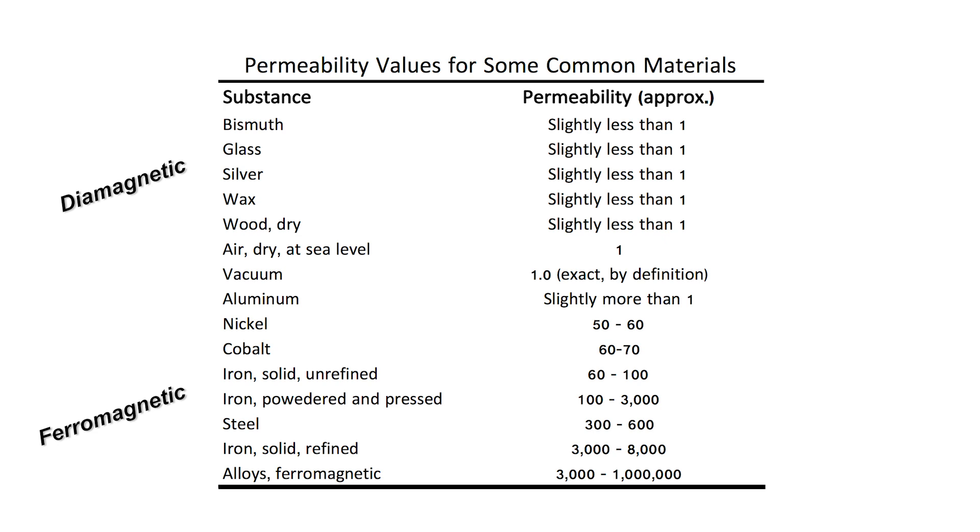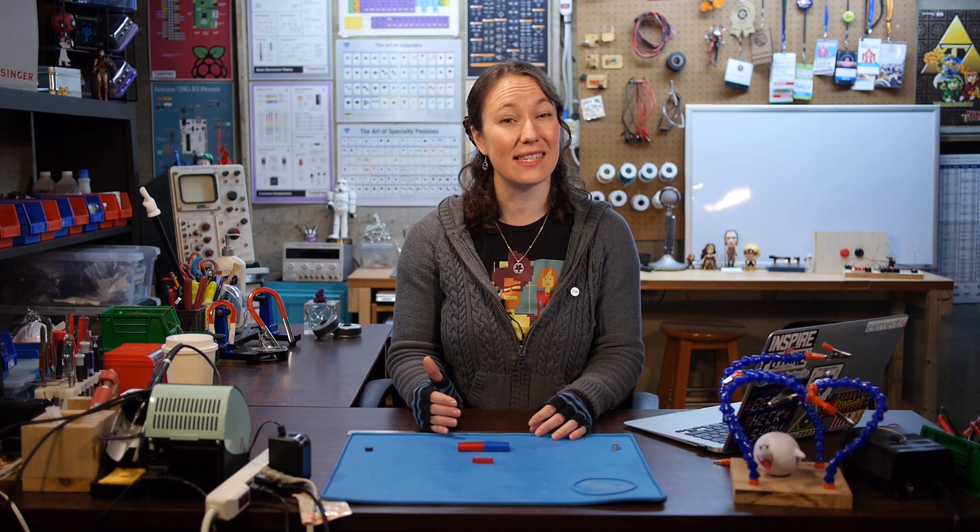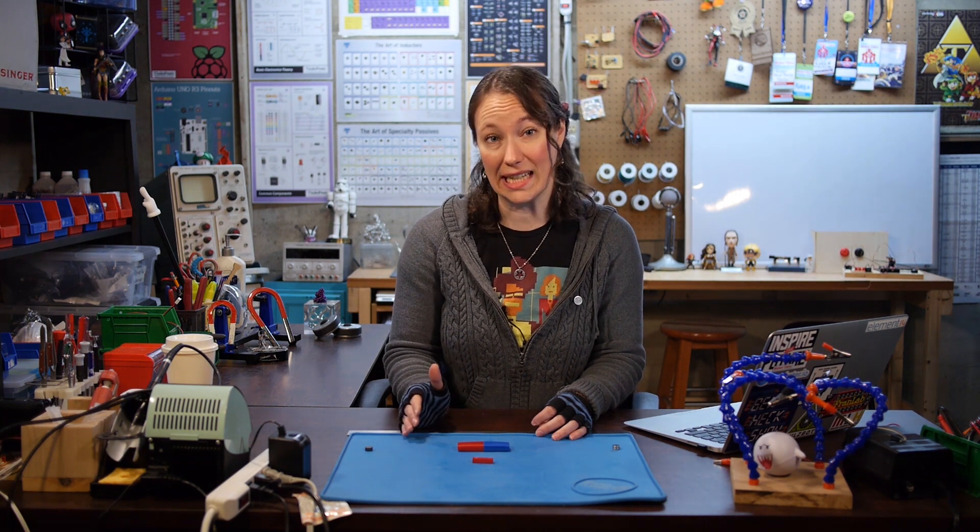Ferromagnetic materials are considered to be magnetic, while paramagnetic and diamagnetic materials are considered to be non-magnetic. However, no diamagnetic material exists that can decrease the strength of a magnetic field as much as a ferromagnetic material can increase it. This will be important to consider later when we talk about magnetic shielding.